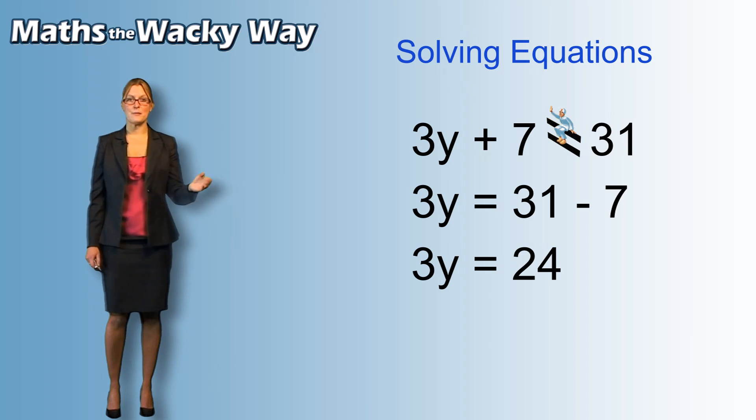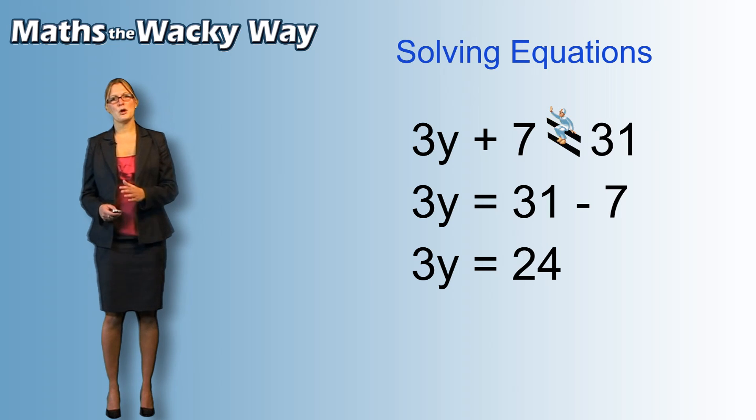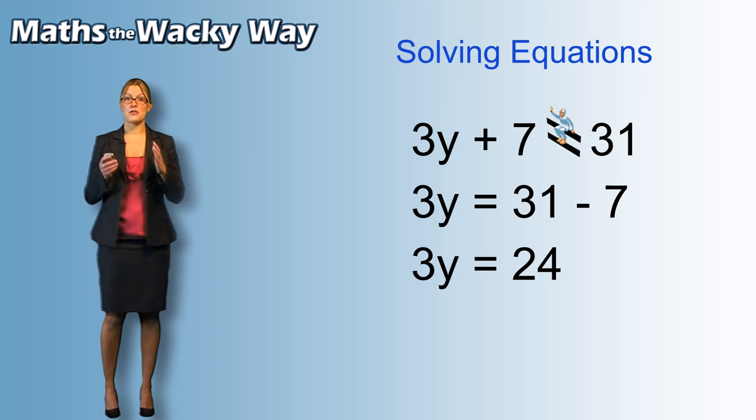Now the only thing that can be moved is the 3. Well, at the moment the 3 is multiplying the y. What we've got to remember is where you have the 3 and the y together, where there is no sign, that's always multiplying.